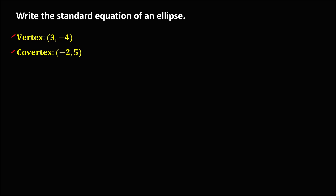First, we need to graph the given information. We set up the axes: positive y, positive x, negative y, and negative x. From the given coordinates of the vertex, x is positive 3 and y is negative 4. We connect and plot this point as the vertex.